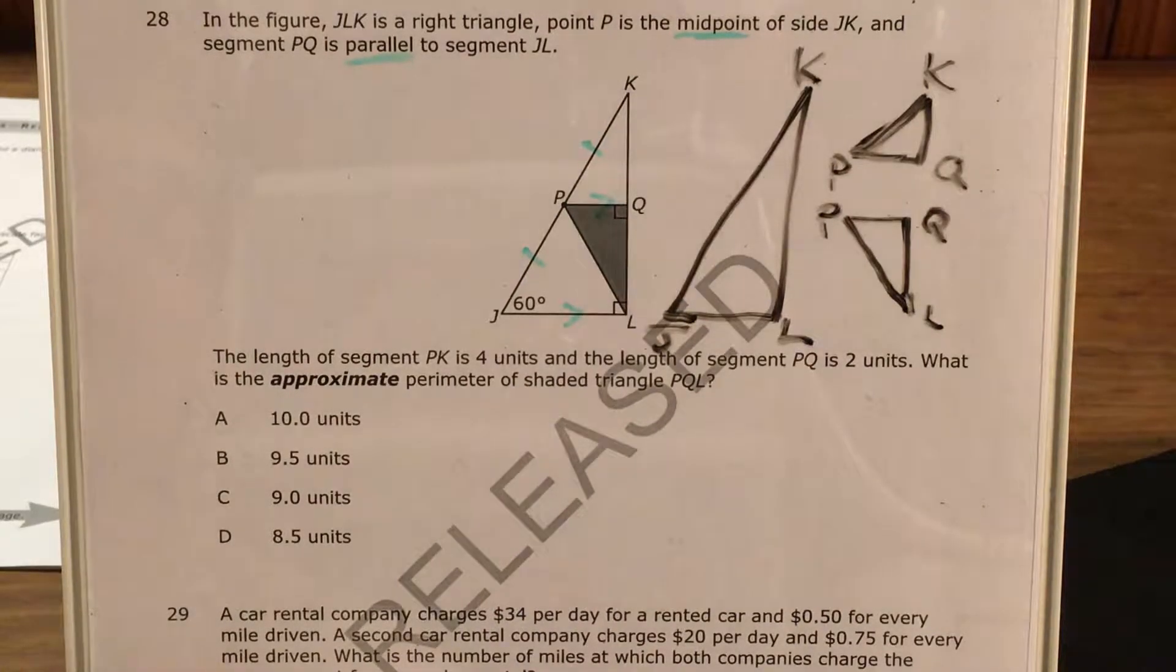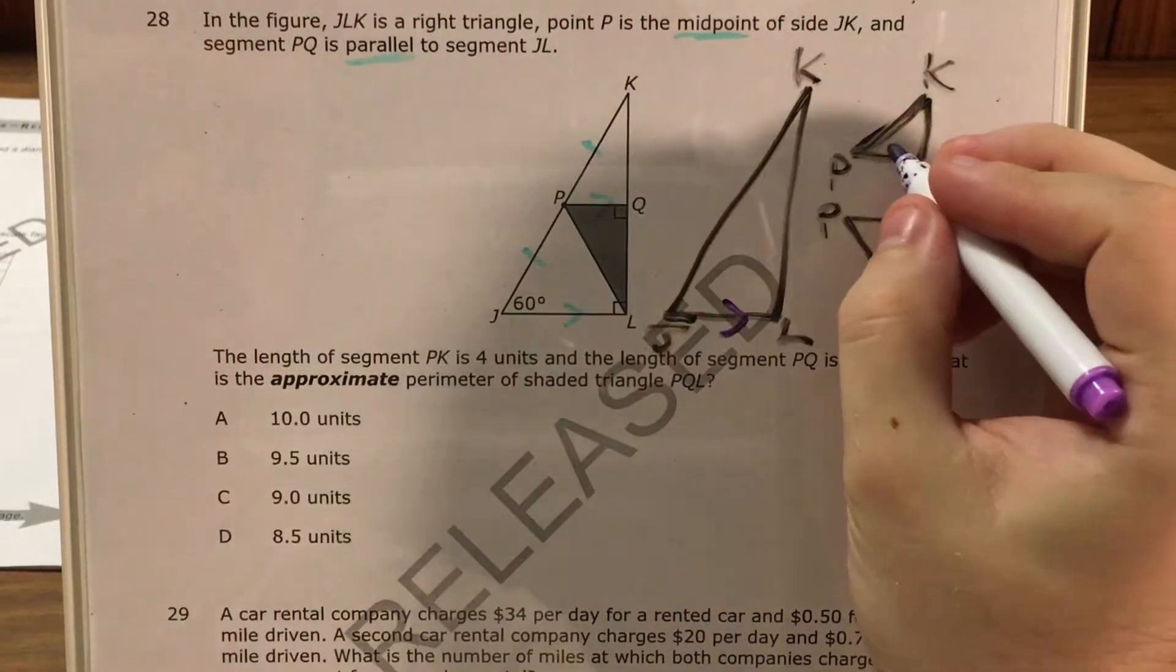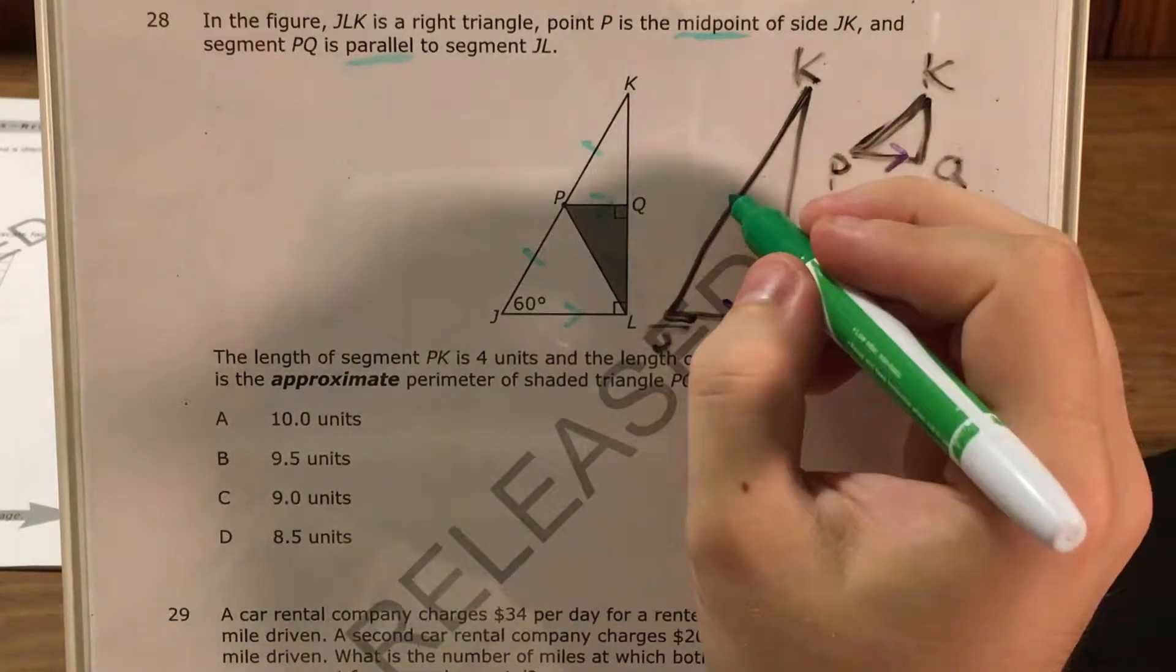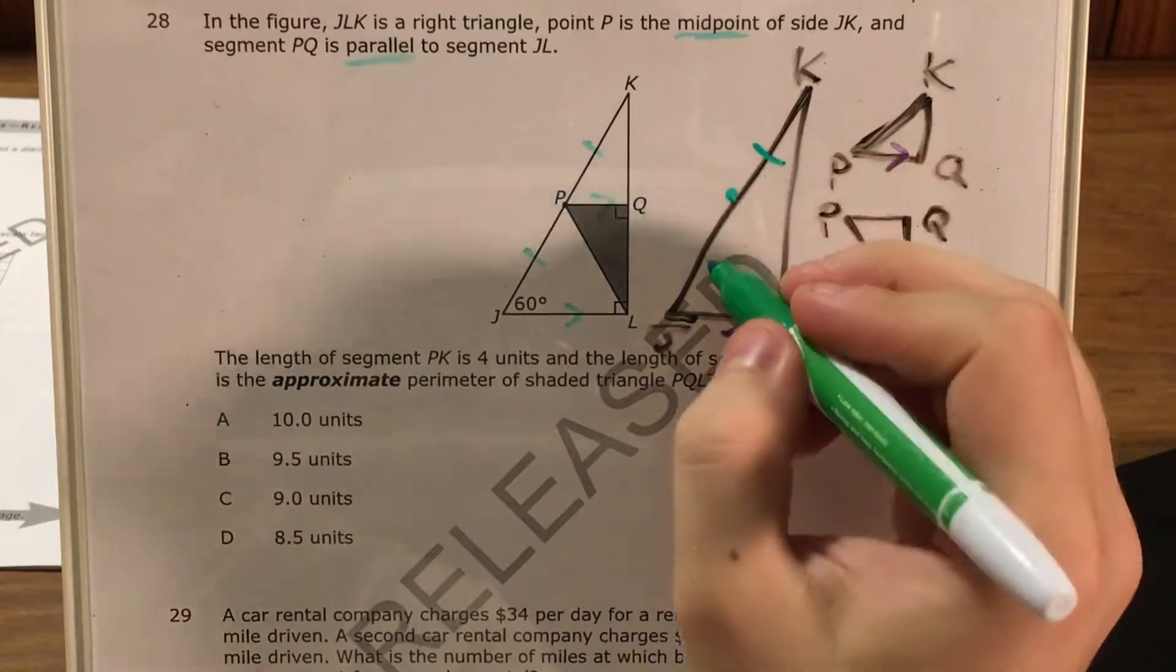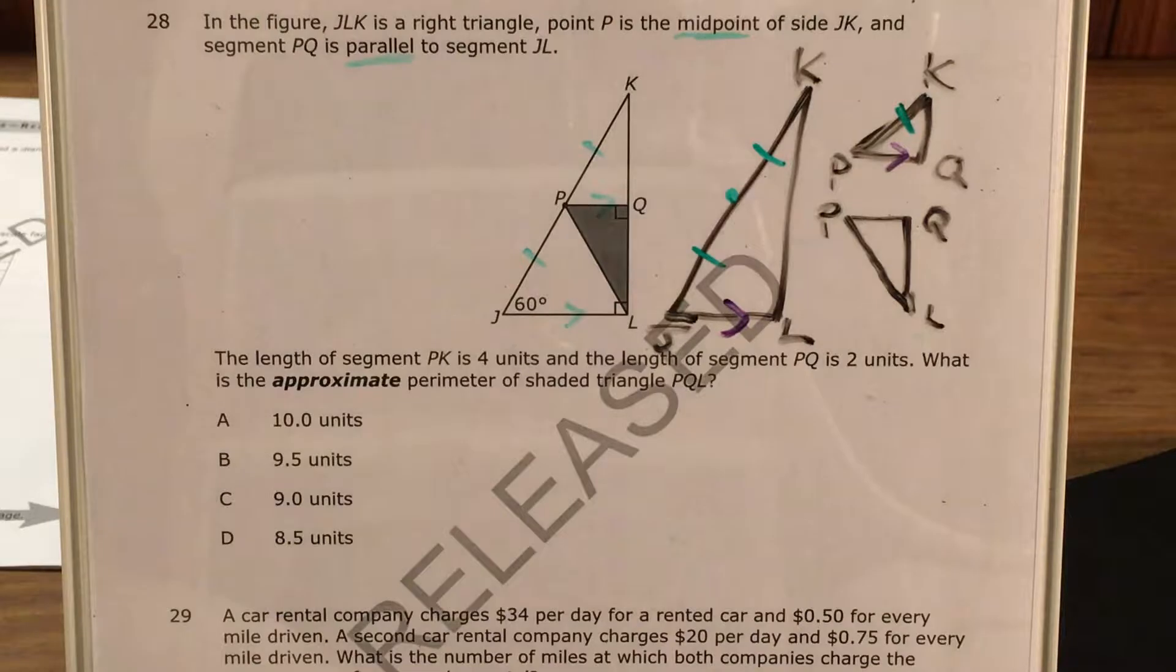So let's go ahead and fill in some of the information that I know. I know that this side and this side are parallel, and that this can be split up into two congruent sides, one of which is also congruent to this one.